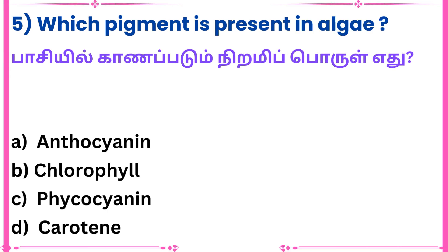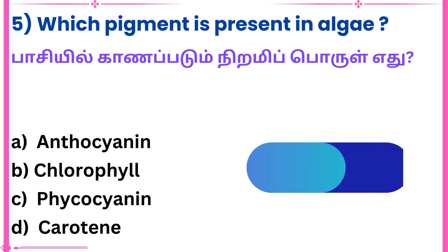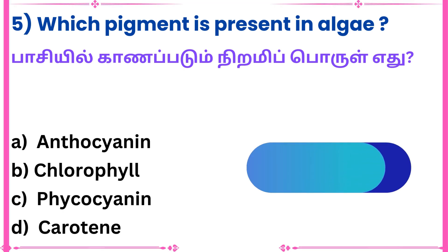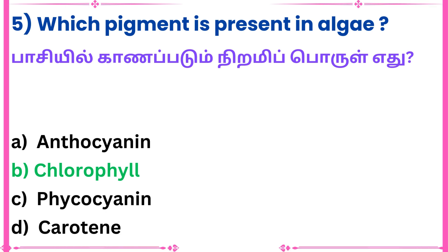Fifth question: Which pigment is present in algae? Answer: Chlorophyll.